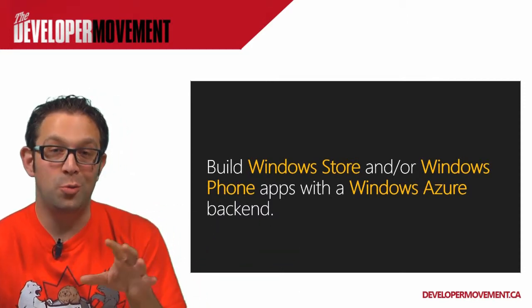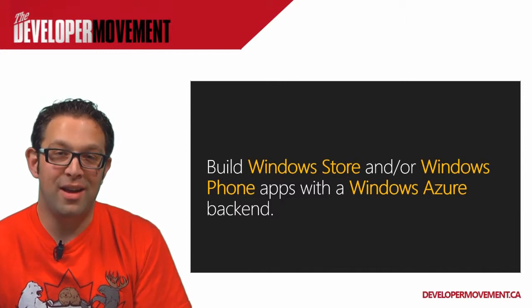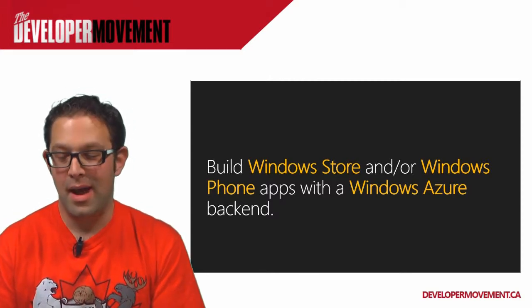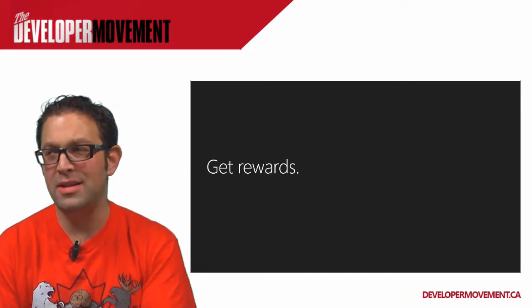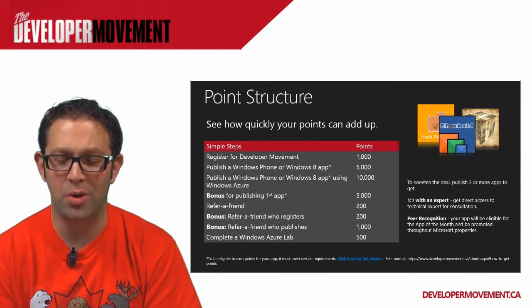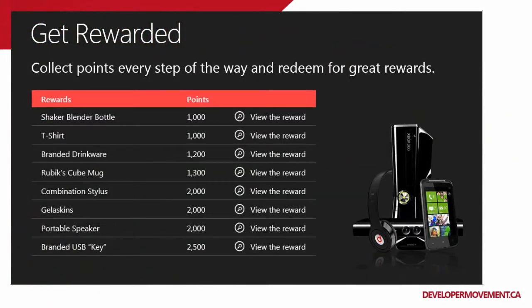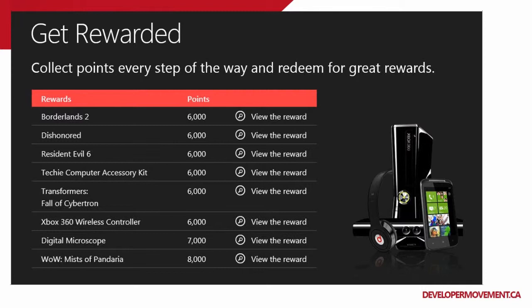What you're doing is building Windows Store applications or games, or Windows Phone applications or games, ideally with a Windows Azure backend, and submitting those to the developer movement. You get rewards in the form of points, and you can take those points and redeem them towards really cool things. There are shaker bottles and T-shirts, but as you build up points you can get things like digital microscopes, Xbox 360 wireless controllers, home theater systems, laptops, TVs, and so on. Check it out at developermovement.ca.